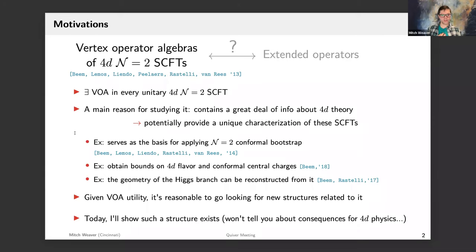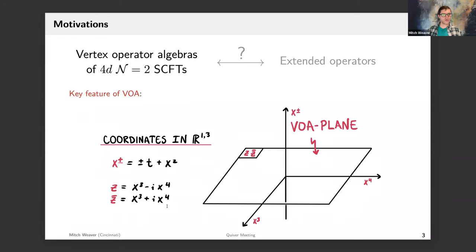Given the utility of the VOA in describing aspects of the ambient 4d theory, it's reasonable to look for new structures related to it, because if you find such a new structure you may subsequently find out something new about the 4d theory. Today I'm going to show you that such a structure exists, but I won't tell you about the potential consequences for 4d physics — that will have to wait for perhaps my next Quiver talk.